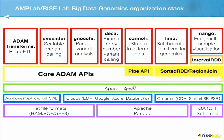On top of the ADAM APIs, we have all sorts of different applications. The one in particular I'm going to talk about today is called Cannoli, and that builds on an API in ADAM called the Pipe API.